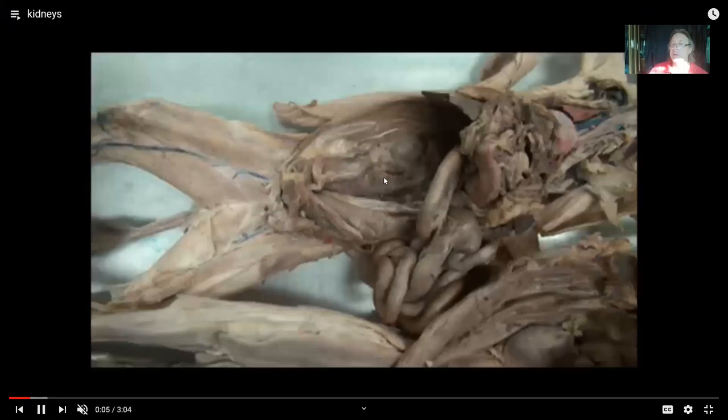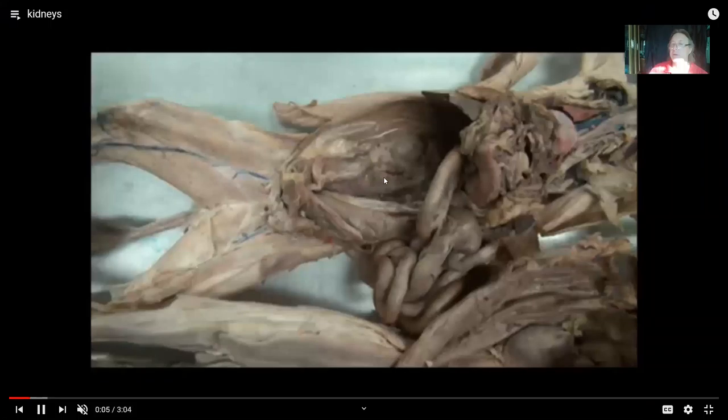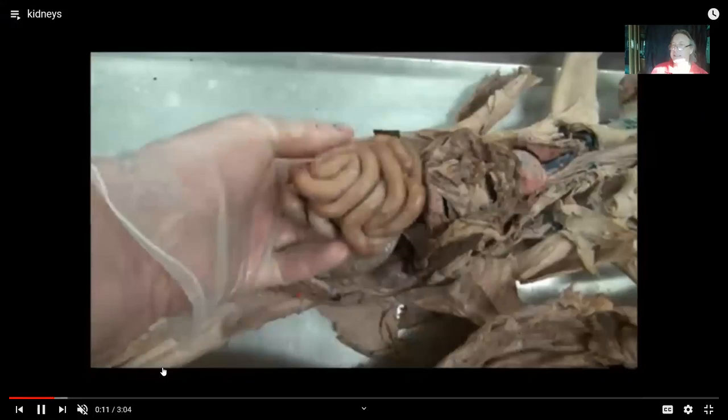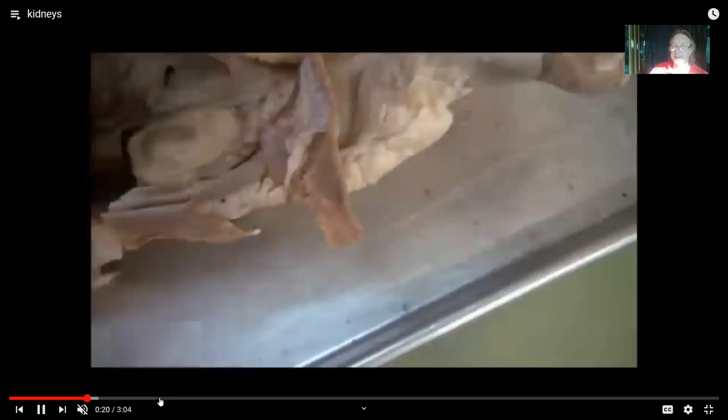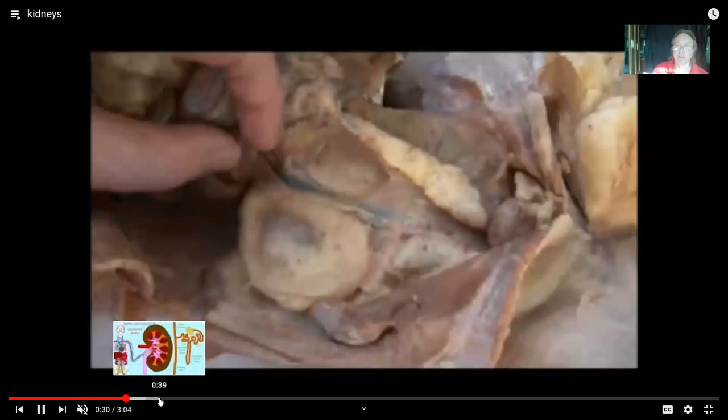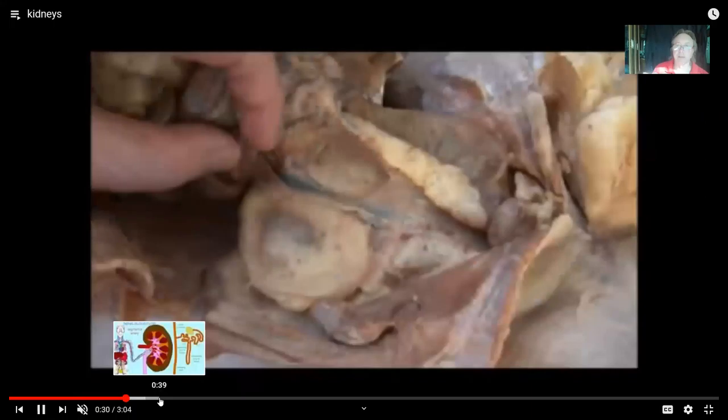The kidneys, as seen in this model of a human or in this cat, are not in the same cavity as the intestines. They're not in the body cavity — they're behind it. Officially, the name for that is retroperitoneal. They are held in place by adipose. You can see in the cat there's a fat capsule around the kidney. If one were to lose a great deal of weight, one potential risk is that a kidney could dislodge without this fat capsule.